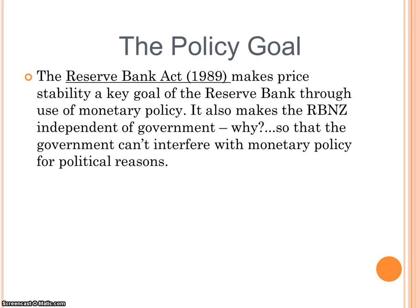There is a policy goal around monetary policy set down in the Reserve Bank Act 1989, which makes price stability a key goal through monetary policy. It also makes the Reserve Bank independent of the government to avoid political interference — so they don't just drop interest rates because an election is coming up. The Reserve Bank should operate in the best interests of the economy, not the current government.